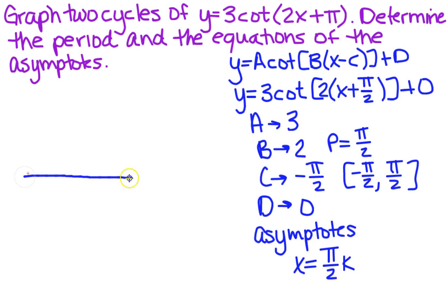So when I get ready to actually draw my graph, I put in my values for k, and I'm going to have a vertical asymptote here. And what is that? That's pi over 2, right?